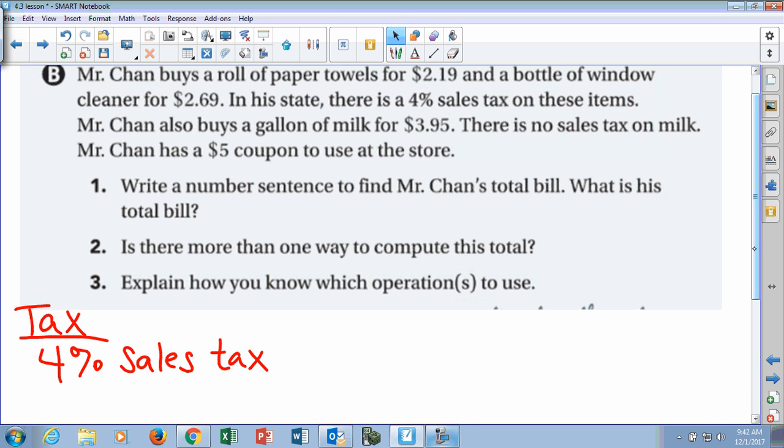So now let's go to the next one. So we did a good job there. Now the next one's a little different. You're going to need some info, so I'm going to give you some info to help you solve this. So Mr. Chan buys a roll of towels, paper towels, for $2.19, and a bottle of window cleaner for $2.69. In his state there is a 4% sales tax on these items. Mr. Chan also buys a gallon of milk for $3.95. There is no sales tax on milk. Mr. Chan has a $5 coupon to use at the store.